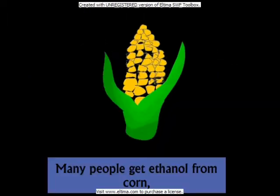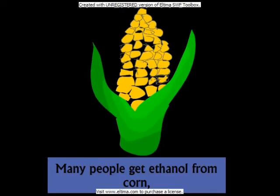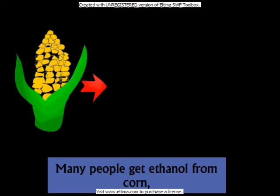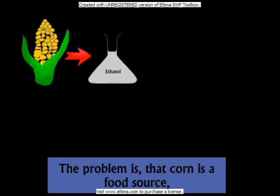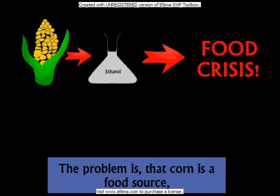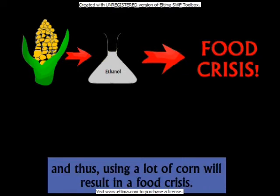Many people get ethanol from corn because corn contains a lot of sugar. The problem is that corn is a food source, and thus using a lot of corn will result in a food crisis.